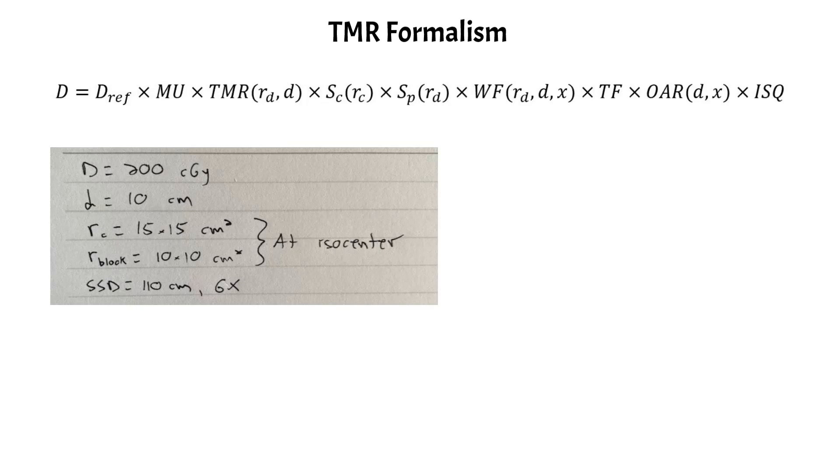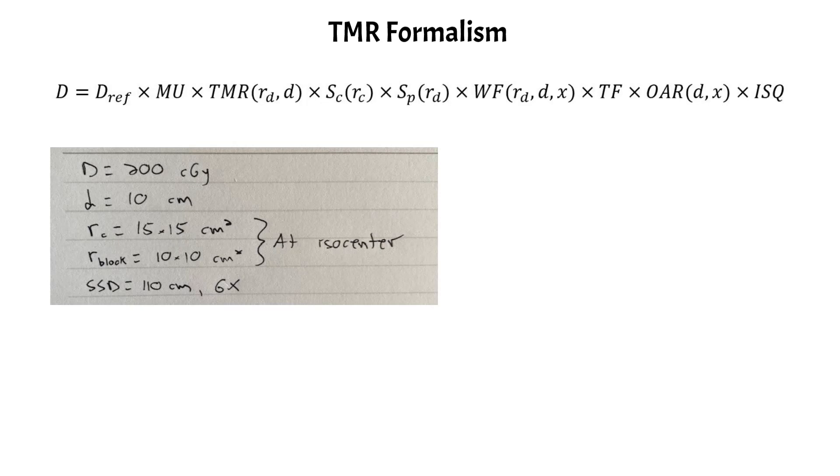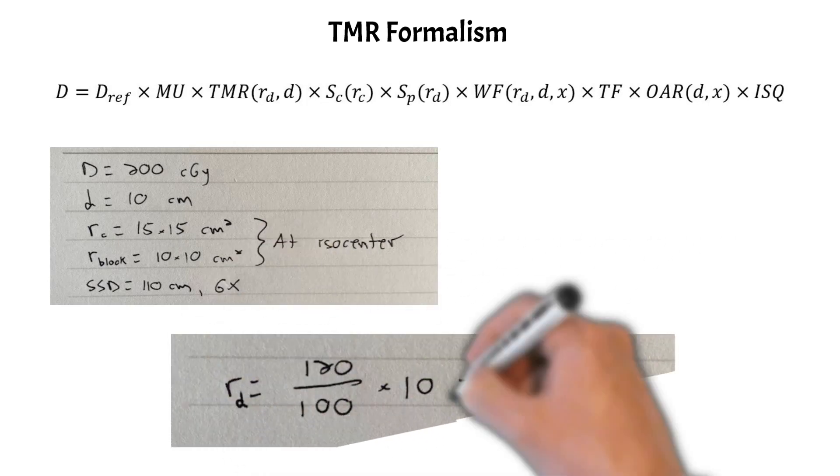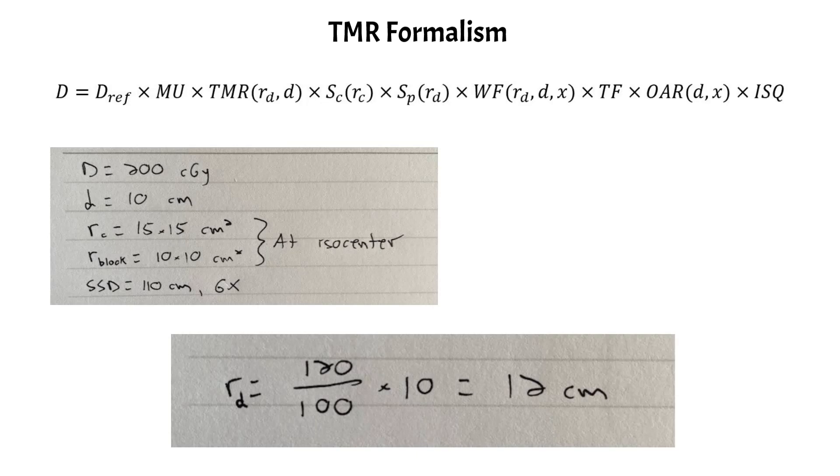And if you really stare at the equation there, you see we need to calculate the field size at the depth of the calculation. In the PDD formalism, we needed it at the surface. But in the TMR formalism, we actually need it at the depth of calculation. So using beam divergence with the SSD equal to 110 and depth of 10, that gives us a source to calculation distance of 120. And we divide it by the source to isocenter distance and multiply it by the blocked field size.